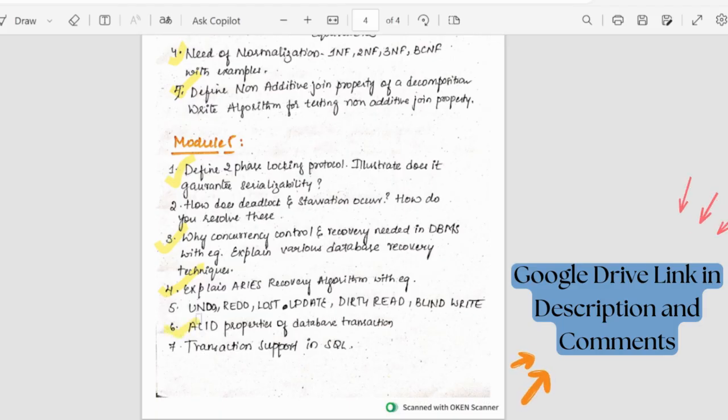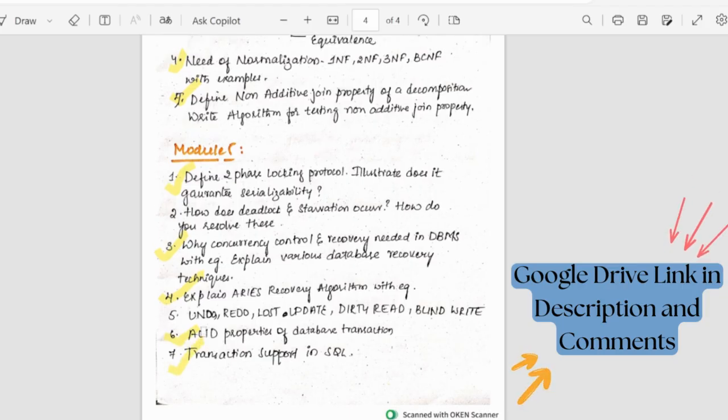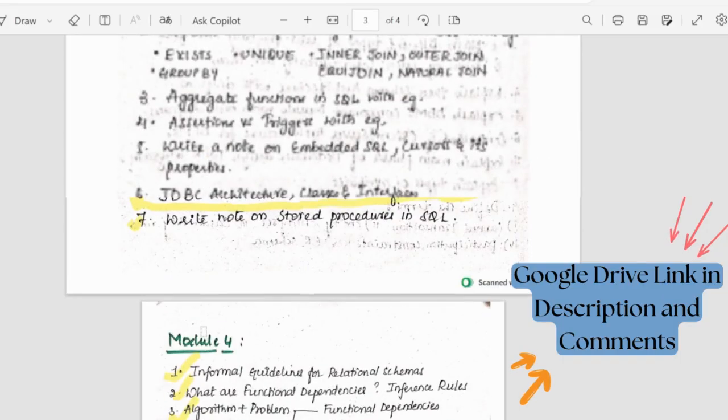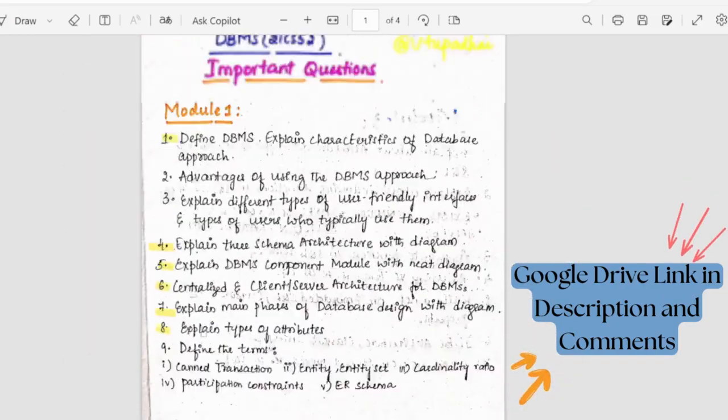Then ACID properties, this could be asked for two or three marks. Transactional support in SQL can also be asked for five or six marks. Here I have covered the important topics, the most important topics of all the modules.